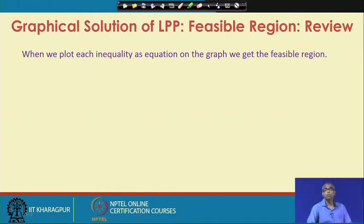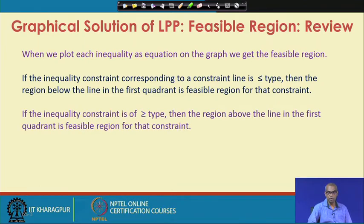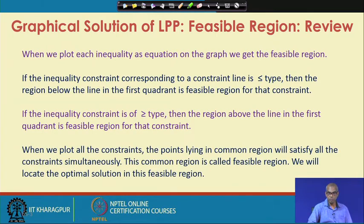Let us review what we discussed about the feasible region when solving a linear programming problem using the graphical method. When you plot each inequality as an equation on the graph, we get the feasible region. If the inequality constraint is of less-than-or-equal-to type, the region below the line in the first quadrant is the feasible region. If the inequality constraint is of greater-than-or-equal-to type, the region above the line in the first quadrant is feasible. The points lying in the common region satisfy all constraints simultaneously — this common region is called the feasible region, and we locate the optimal solution within it.